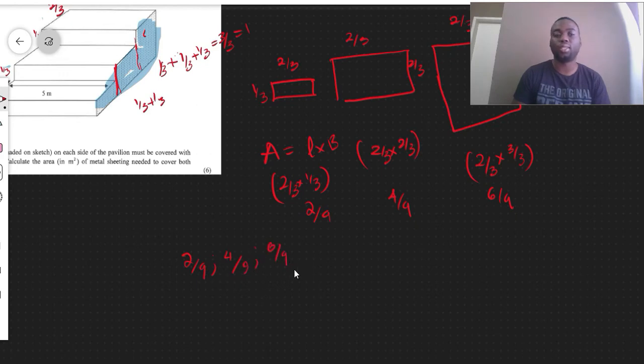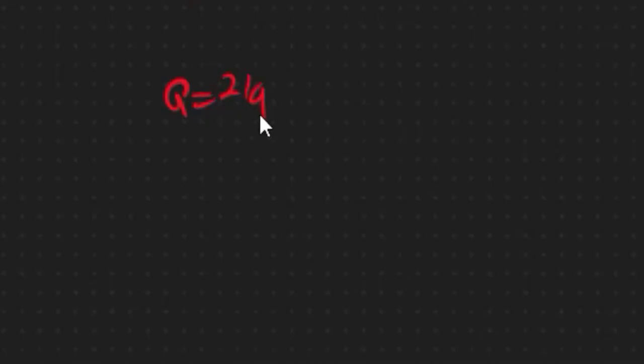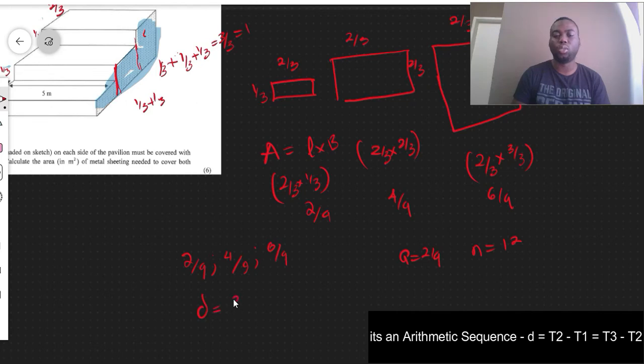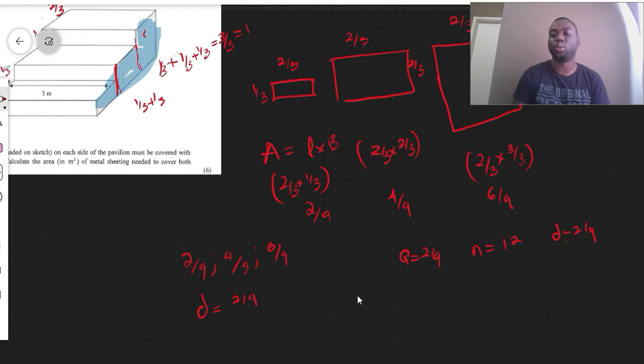The question asked us to get the total area up to 12 steps. So we have our A to be 2 over 9. We have our N to be 12. Now we need to determine is this an arithmetic or a geometric sequence? D would be 2 over 9. Now the next step is that since we want the total we find the sum, right? So we use the sum formula.